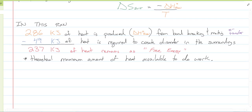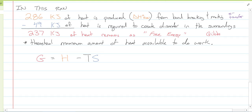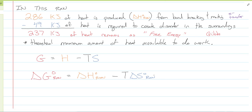The formula here — we're going to call this Gibbs Free Energy, because Gibbs came up with it. So G = H − TS. What we care about is the change, so ΔG° of the reaction equals ΔH of the reaction minus T·ΔS of the reaction. That's our Gibbs Free Energy equation, and this is the equation we will be using.